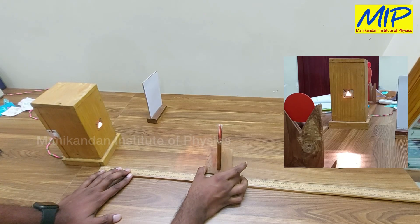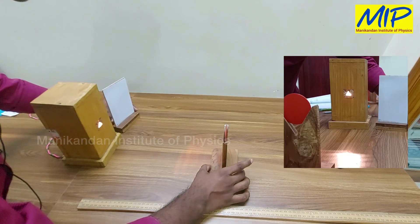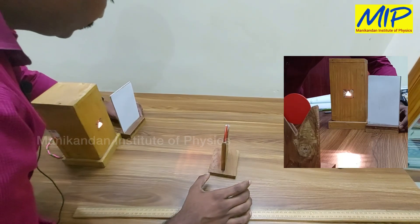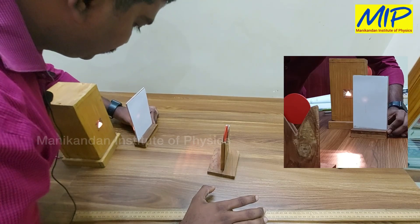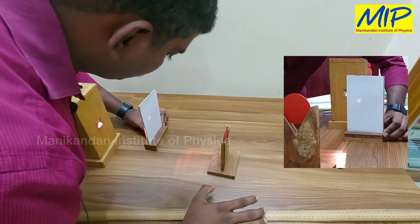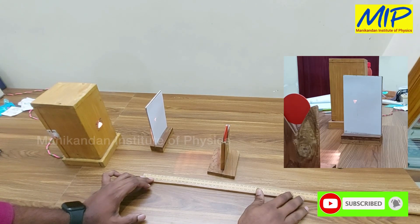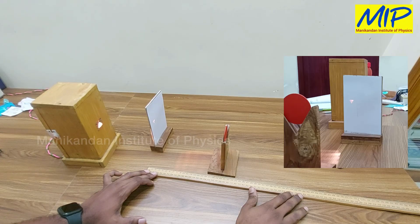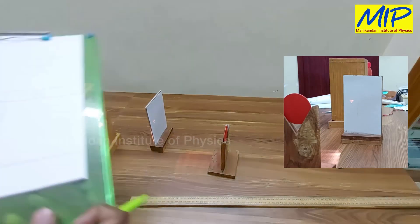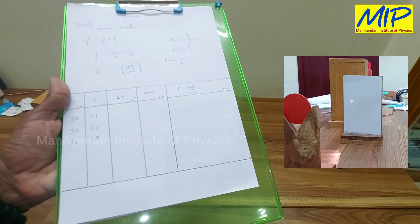Now I increase u from 32 to 34 centimeters. I move the screen again until a clear image forms. Measuring from the mirror to the screen, this point to this point is approximately 19 centimeters. So u = 34 cm and v = 19 centimeters.